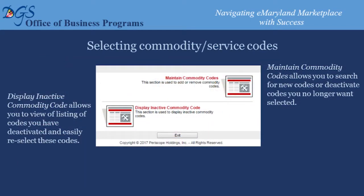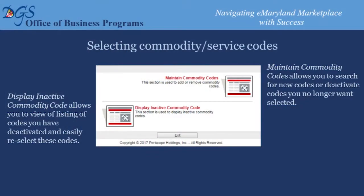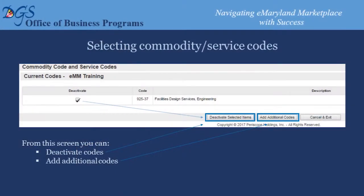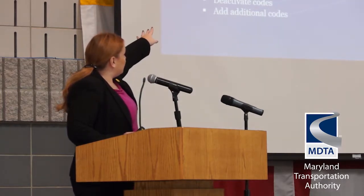You'll see two options: you can maintain your commodity codes — which is where we'll go to look at what you currently have and possibly select more — or display inactive commodity codes. If you've deleted codes and later decide that code was correct, you can go back to that inactive list and re-add it without going through the entire search function again. For today, we'll look at maintain commodity codes. Once you select that, this screen will appear showing a profile that currently has one code selected.